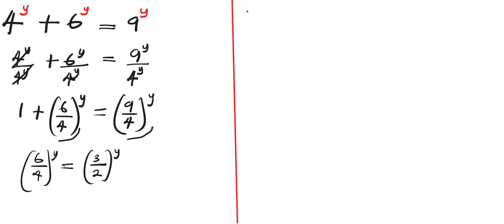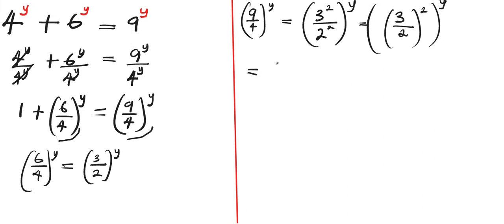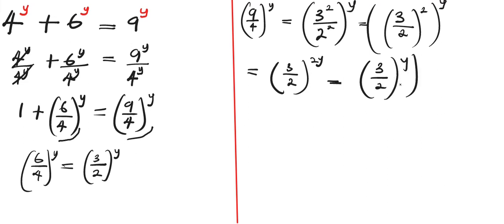Now let's concentrate on (9/4)^y. This can be written as (3^2 / 2^2)^y, which equals (3/2)^(2y). That can also be written as ((3/2)^y)^2.